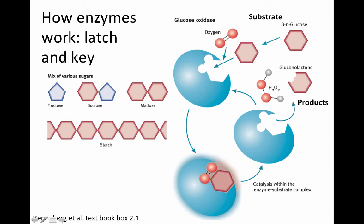The oxygen and beta-D-glucose are transformed into gluconolactone and hydrogen peroxide. The other part of this figure illustrates the specificity of enzymes. For example, beta-D-glucose is a subunit of cellulose, but alpha-D-glucose — which differs by just one bond — is a subunit of starch and would not fit into this enzyme. That's how specific these enzymes are: just one different bond.